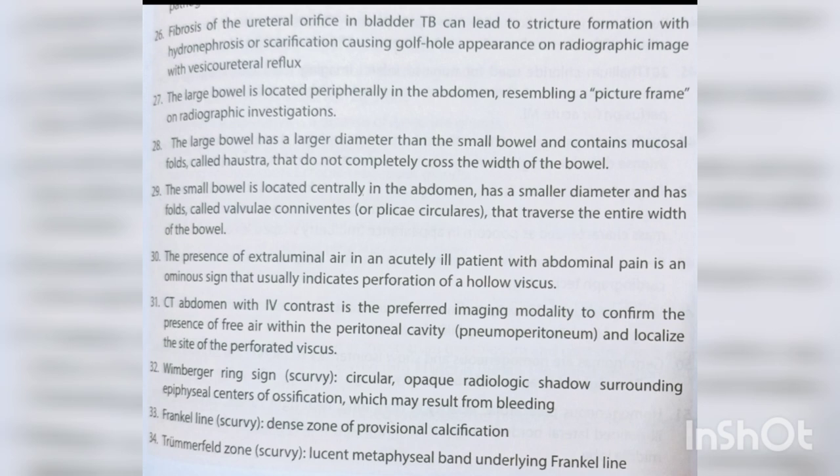The large bowel has a larger diameter than the small bowel and contains mucosal folds called haustra that do not completely cross the width of the lumen. The small bowel is located centrally, has a smaller diameter, and has folds called valvulae conniventes or plicae circulares that traverse the entire width. The presence of extra-luminal air in an acutely ill patient with abdominal pain is an ominous sign usually indicating perforation of a hollow viscus.